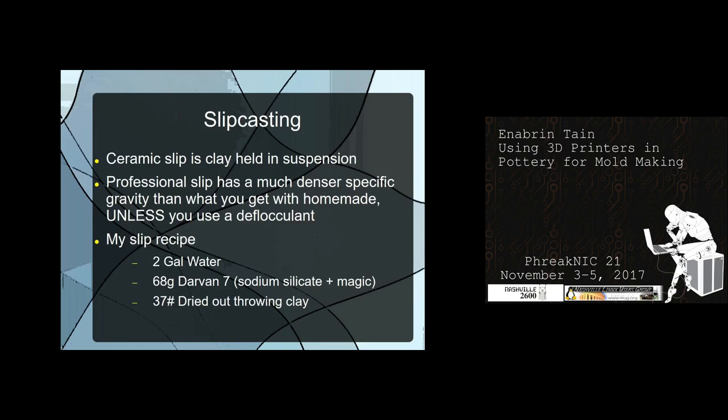Now we're going to move along to the slip casting part. Once you have a mold, how do you use it? What is slip? Ceramic slip is regular clay that has been chopped up really fine and soaked in water — it's in suspension.